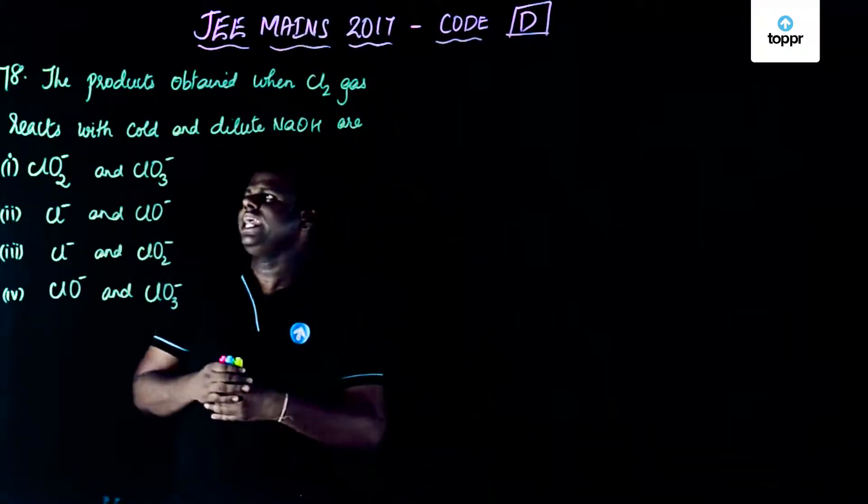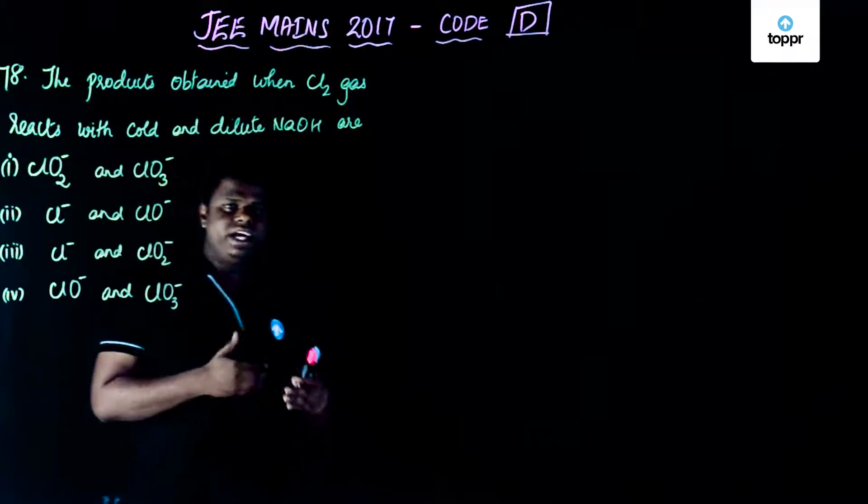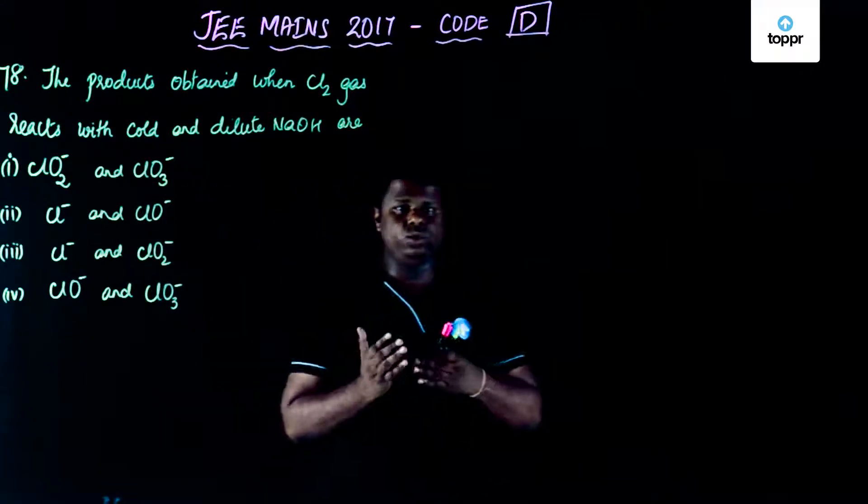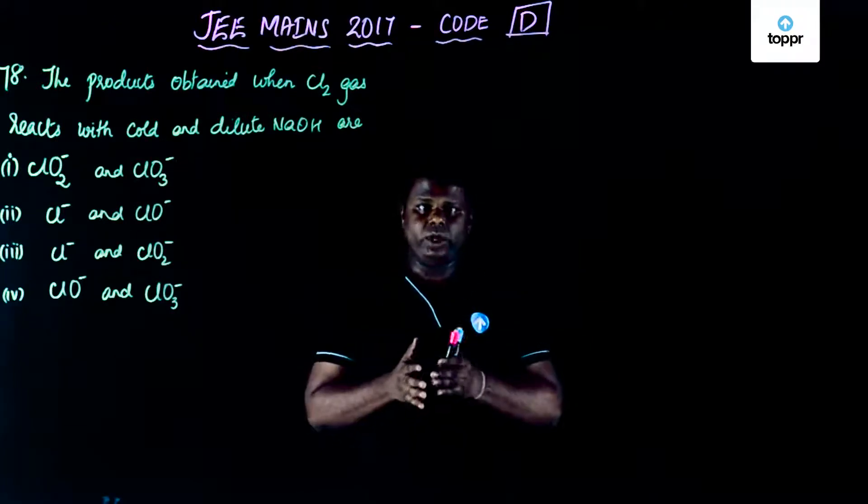The products obtained when chlorine gas reacts with cold and dilute NaOH are. You might have already done these reactions like Cl2 plus NaOH or KOH. Similarly, you have done it for Br2 and I2 as well.